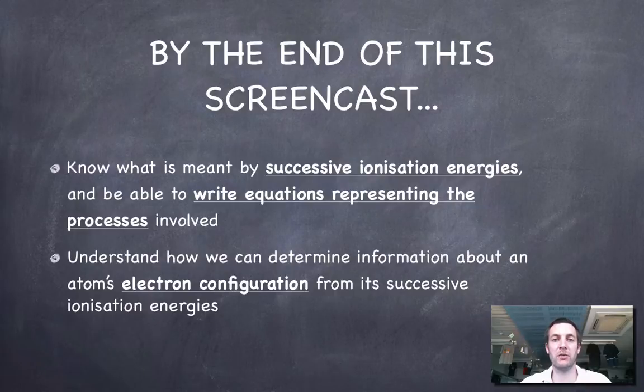Let's just look back at what we were hoping to achieve by the end of this film. Hopefully we know now what is meant by successive ionization energies. And you can write an equation for a first or a second or a third or whatever number ionization energy. And what's more, you can look at tables of data with successive ionization energies and use that information to tell you about the electron configuration of an atom, or in other words, where its electrons are in which shells and how many electrons there are in the shells.